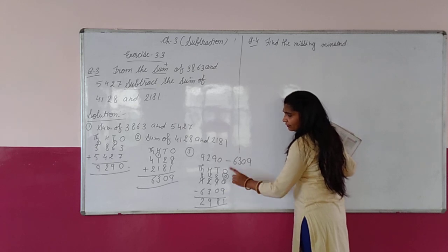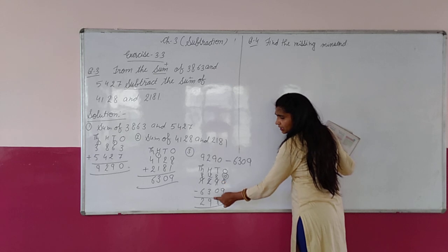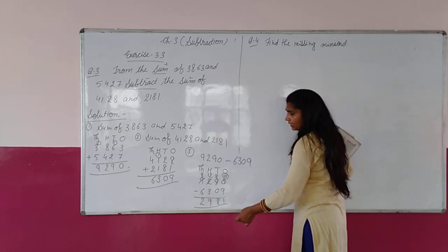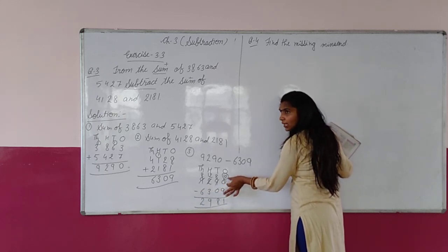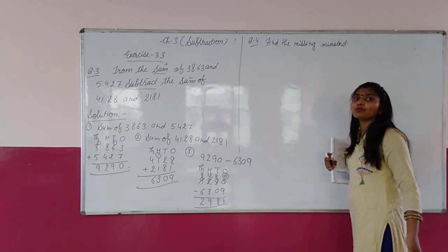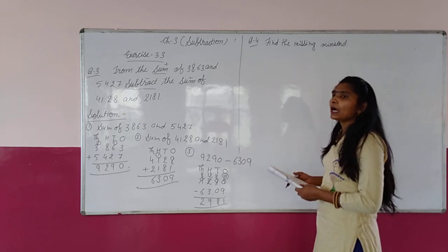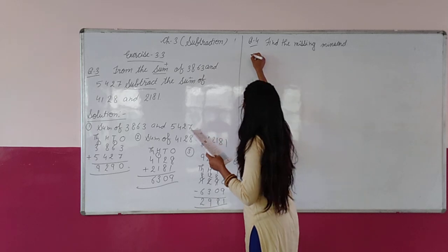9 plus 1 = 10, 1 carry. 8 plus 0 = 8, and 1 carry = 9. 9 plus 3 = 12, 12 के लिए 2, 1 carry. 6 plus 2 = 8, and 1 carry = 9. तो अगर हम इन दोनों numbers को add करते हैं तो हमारा minuend मिल जाता है.